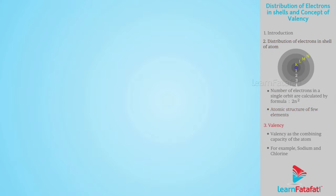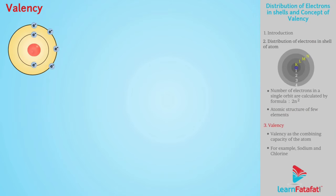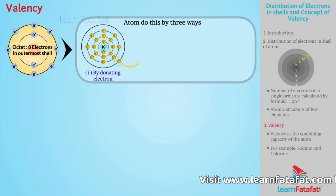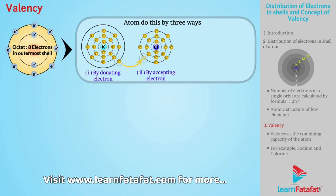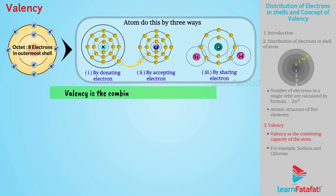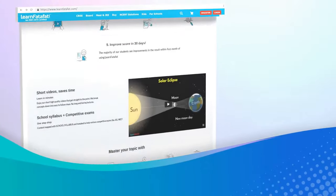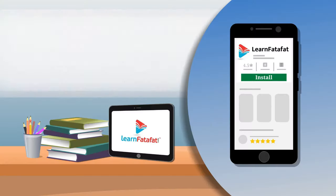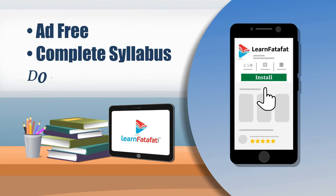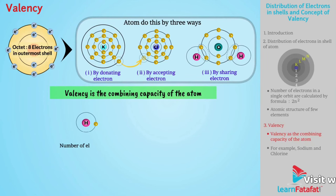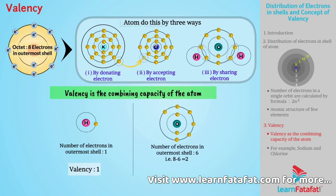Valency is the combining capacity of an atom. Every atom tends to achieve an octet in its outermost shell by either: donating an electron to another atom, accepting an electron from another atom, or sharing its electrons with another atom. Valency is defined as the number of electrons in the outermost shell, or 8 minus the electrons in the outermost shell.